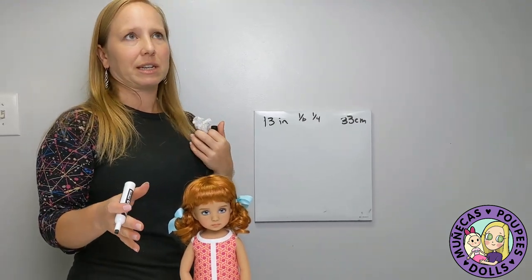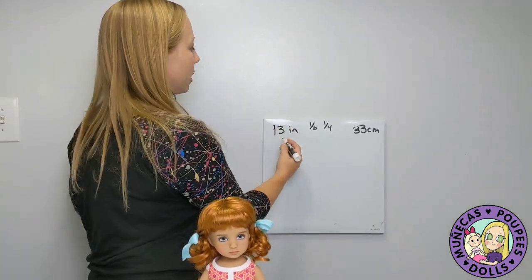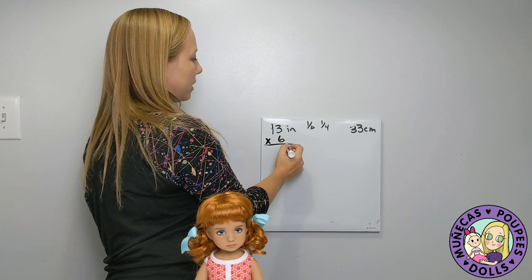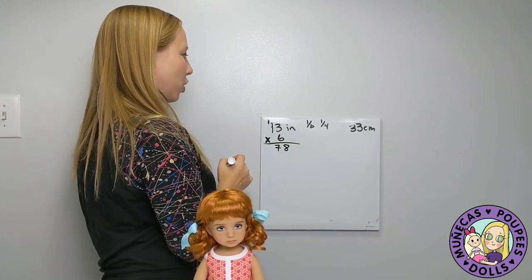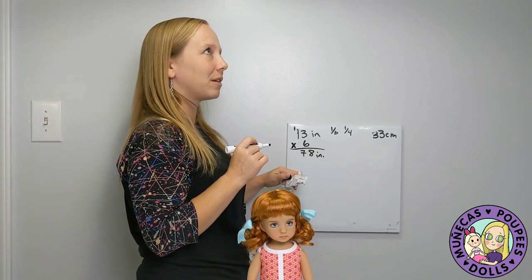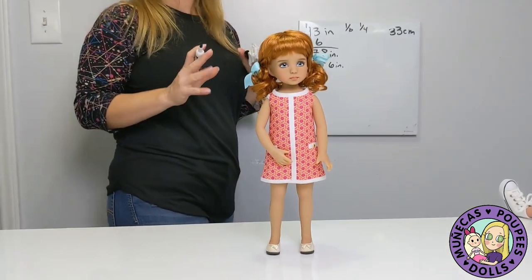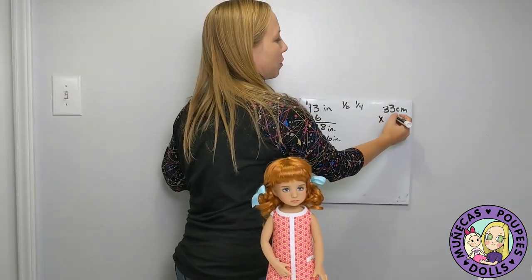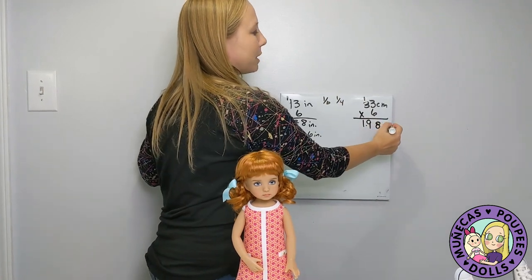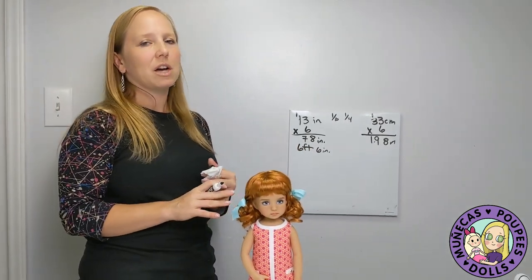I see my Little Darlings as around 10 to 12 years old. If we try 1/6 scale: 13 times 6 equals 78 inches — that's six feet six inches tall. I definitely don't think she'd be a 1/6 scale doll. In centimeters: 33 times 6 is 198 centimeters — almost a two-meter-tall girl of 10 or 11. That's probably not right.